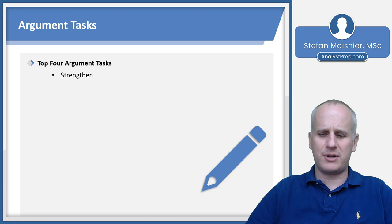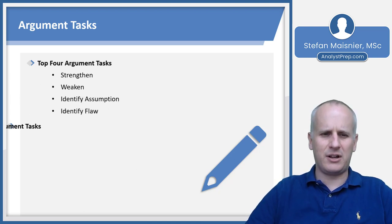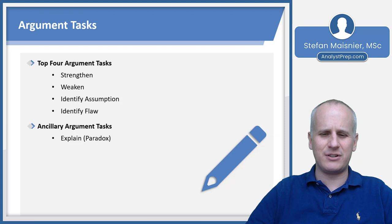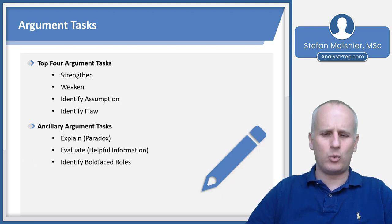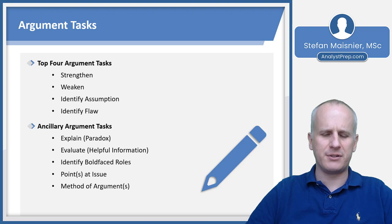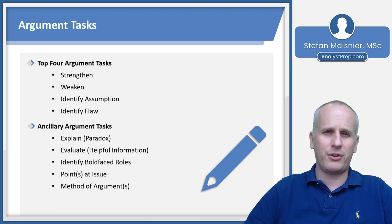Our top four argument tasks are going to be: strengthen, weaken, identify an assumption, or identify a flaw. There are also ancillary argument tasks such as explaining something that happens — often considered a paradox — where you reconcile pieces of information. You can also be asked to evaluate whether a conclusion is viable, identify the roles of statements, find what point is at issue between multiple speakers, or address the method of argument. Each of these is significantly less likely than the top four, but harder difficulty questions might present something more abstract.